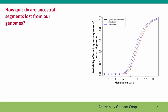We can also ask how quickly ancestral segments are lost from our genome entirely. This is an analysis by Dr. Graham Coop of the probability of not inheriting any segments from an ancestor as you go back in time. For parents, grandparents, and great-grandparents, the odds are that at least one chromosome still carries segments of their DNA. But by 7, 8, 9, or 10 generations back, the odds of having no representation anywhere in the genome become much, much higher. By about 15 generations back, almost all of our ancestors are not represented in our genome.